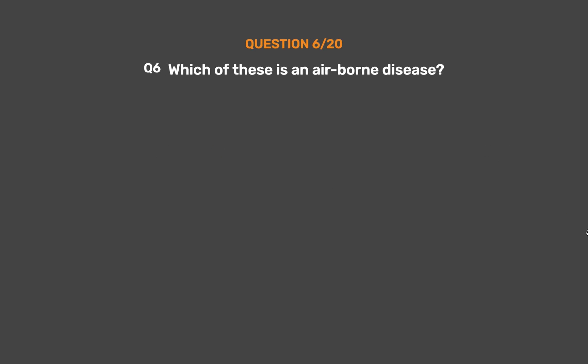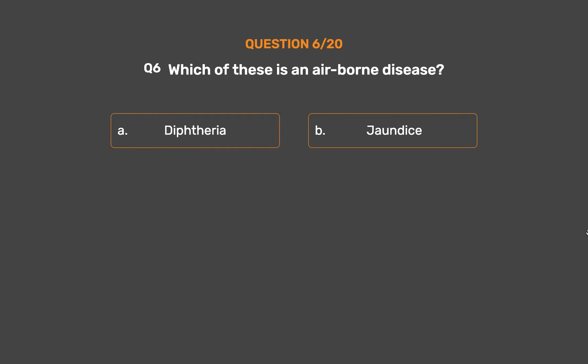Question number 6. Which of these is an airborne disease? Option A: Diphtheria. Option B: Jaundice. Option C: Syphilis. Option D: Cancer.